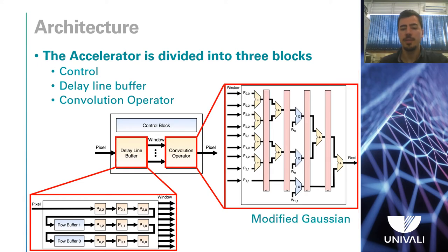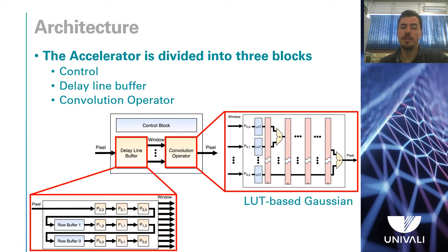In the second version, MultiFilter Gaussian adds the values of pixels that have the same coefficient in the mask first. This results in fewer multipliers being used, but creates overflow in the sum. The overflow is handled using larger data words, which makes adders more expensive. In the LUT-based Gaussian, multiplication operations are replaced by lookup tables, since there are only 256 possible values for each coefficient, because the pixels are 8 bits. The number of LUTs is equal to the number of coefficients or multipliers.